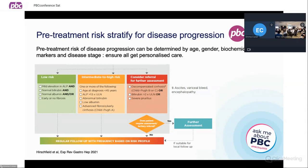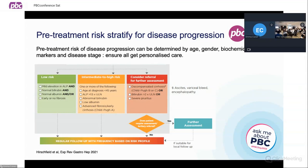If you've got a high alkaline phosphatase — greater than 1.5 times the upper limit of normal — that's another factor. If your bilirubin is abnormal, outside of the common cause called Gilbert's syndrome — a genetic inherited condition where you can't completely process bilirubin — once that's been excluded, if your bilirubin is still abnormal, that's something to be aware of. And if your albumin is low, or you have some evidence of advanced fibrosis or early signs of cirrhosis, you're in that intermediate to high risk category.